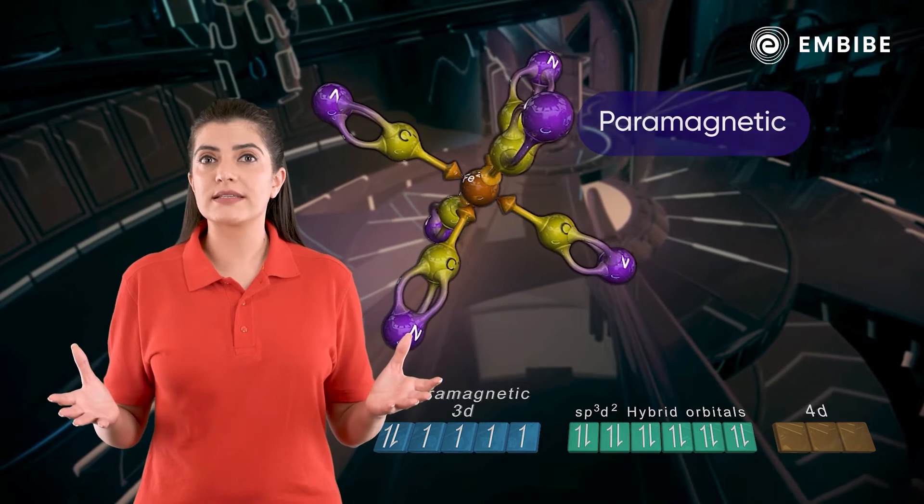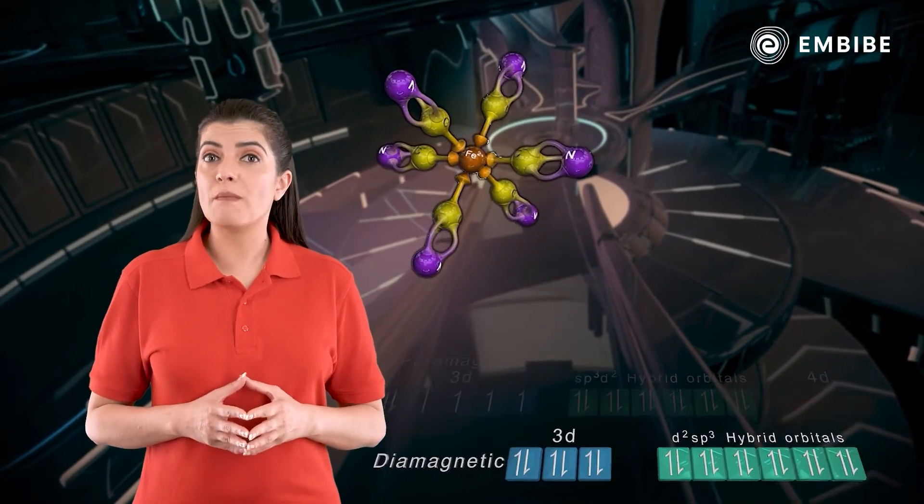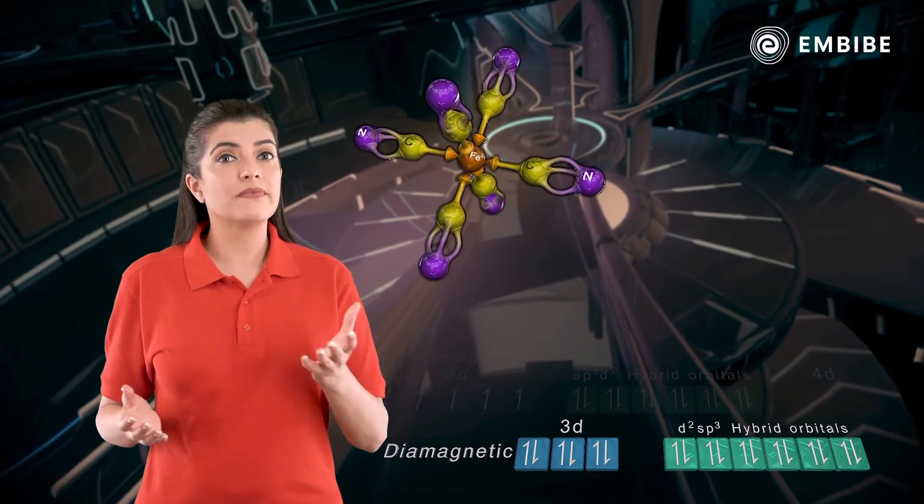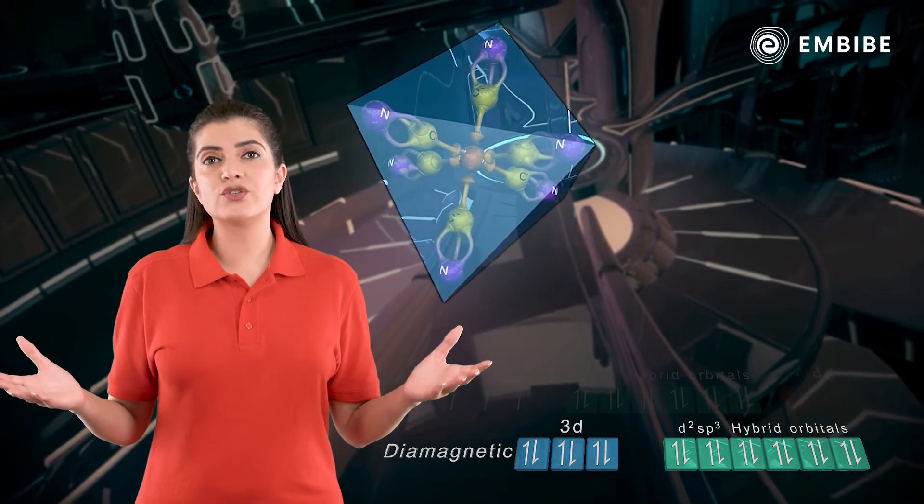It has been found that [Fe(CN)6]4- is diamagnetic. Thus it involves d2sp3 hybridization and its geometry is octahedral.